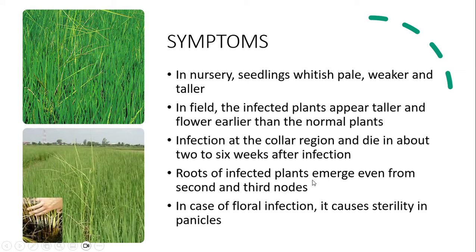Roots of infected plants emerge even from the second and third nodes — adventitious roots in case of attack of this disease. In case of floral infection, it causes sterility in panicles.